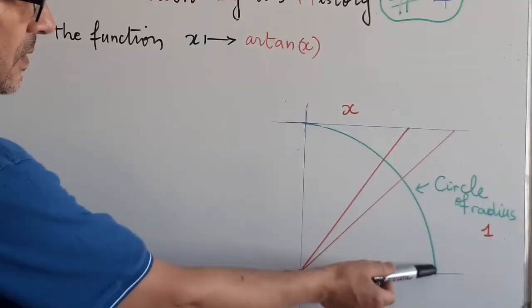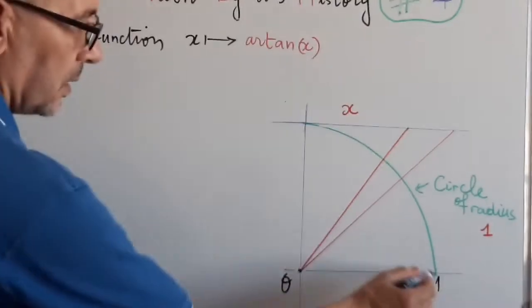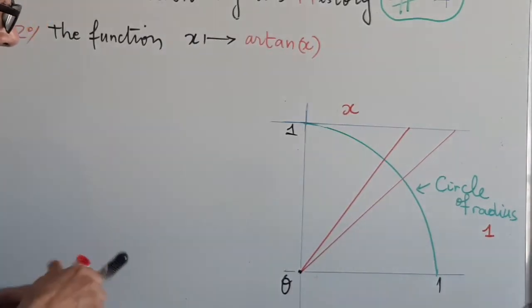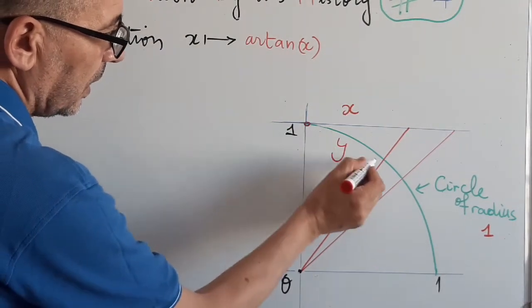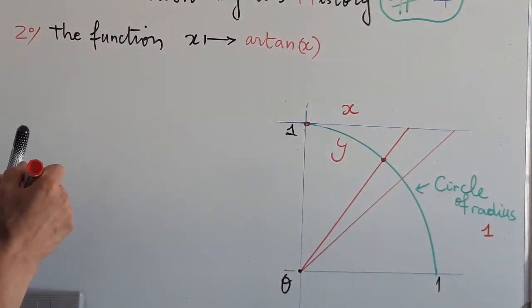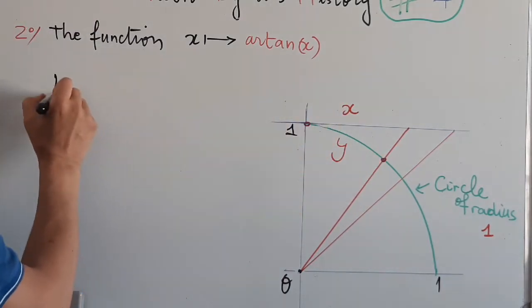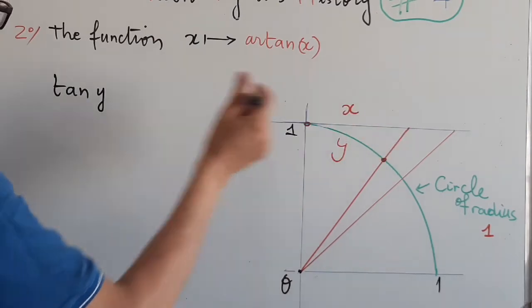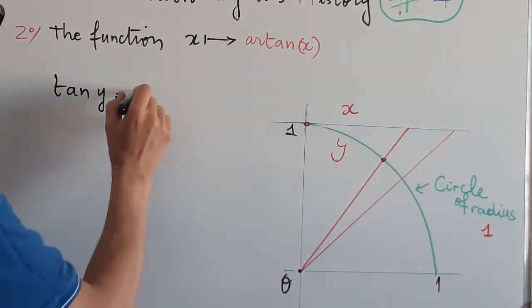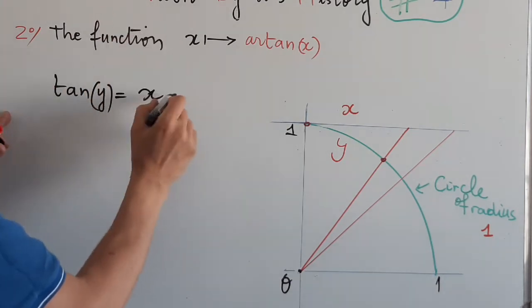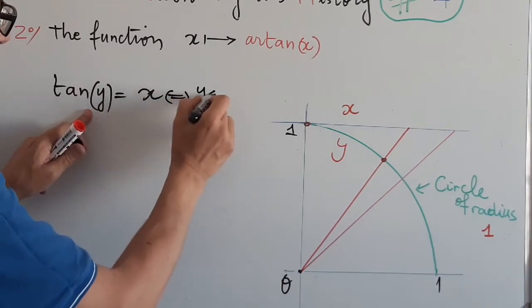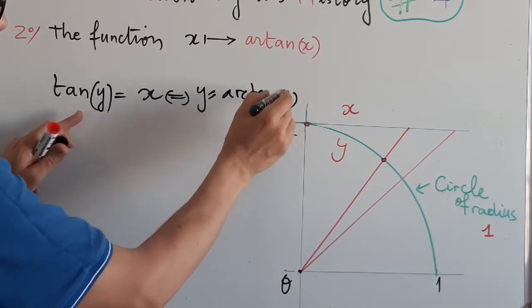Observe that in this circle of radius 1, this is a tangent to the circle at this point. Now x is the length of this segment, and y will be this arc of the circle. The first observation is that tangent of y, because the radius is 1, equals x. So from here one can find y in terms of x: y will be denoted by arctan(x).